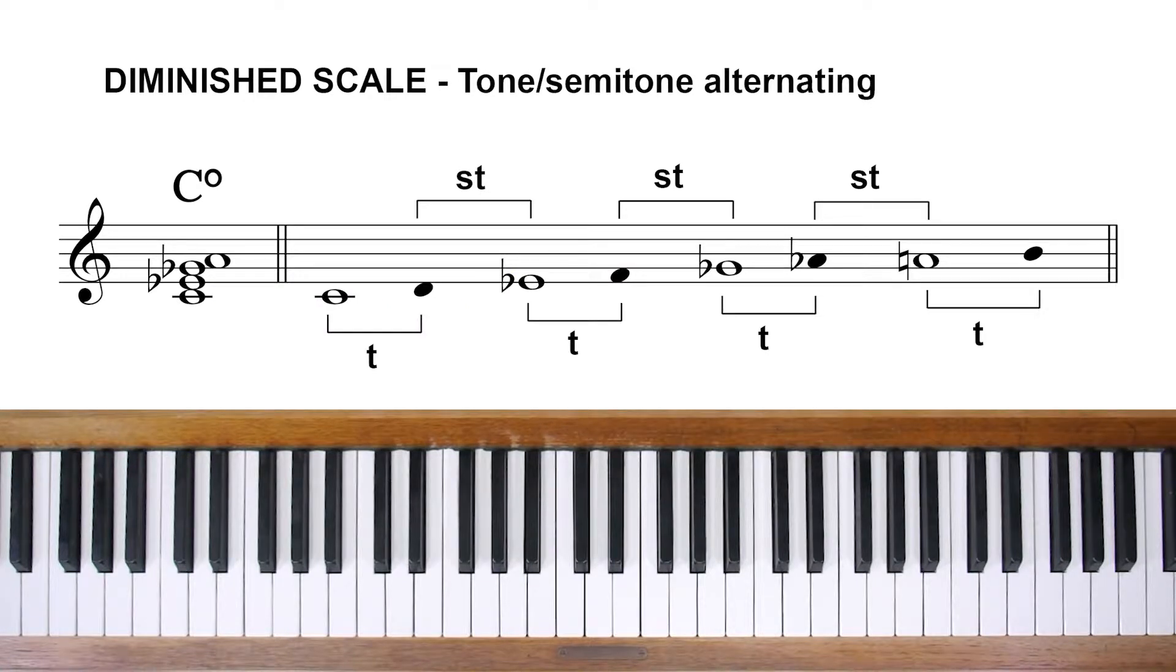The scale that fits a diminished chord is constructed by adding four notes, each of which is a tone up from a note of the chord. This preserves the inbuilt minor third symmetry and results in an eight note or octatonic scale.